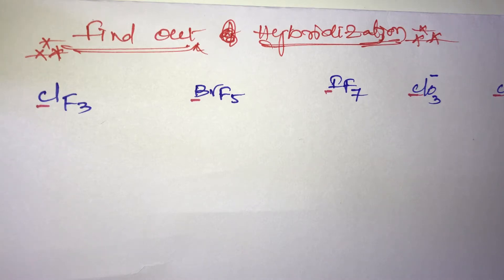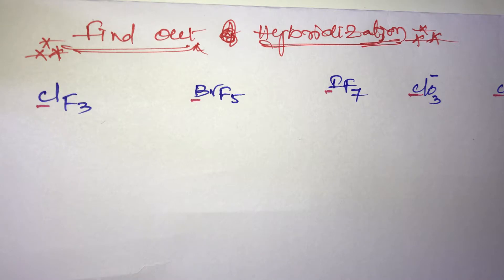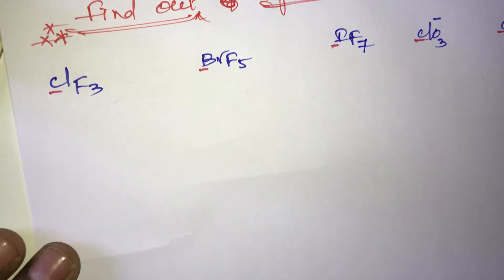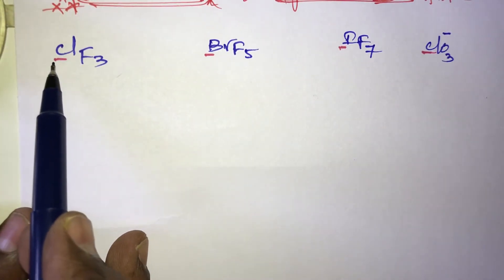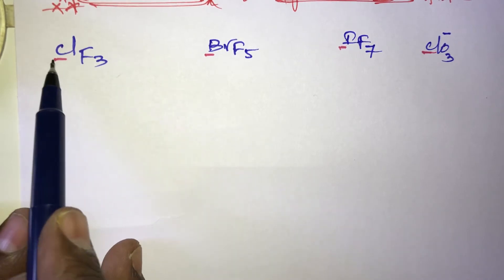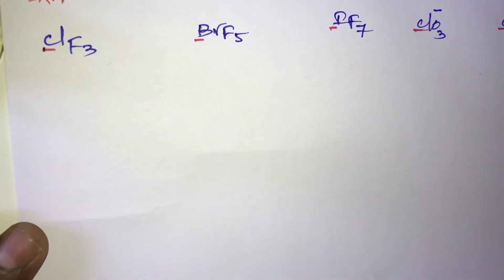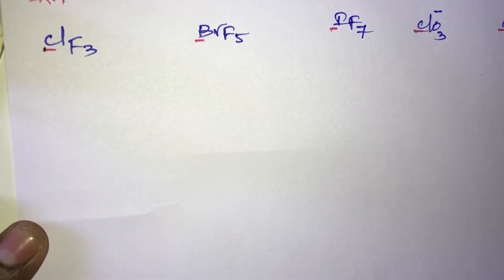Hello students. The next question is a continuation: find out the hybridization of the following species — ClF₃, BrF₅, IF₇, ClO₃⁻, and ClO₄⁻. In ClF₃, what is the hybridization of chlorine? Chlorine belongs to the seventh group elements.